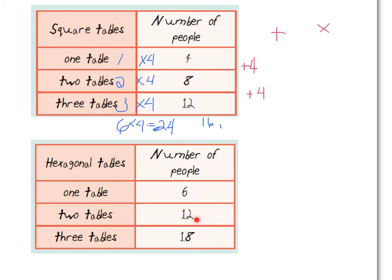6 plus what would give me 12? Well, plus 6. 12 plus 6 would give me 18. So perfect. If I was doing number of people to number of people, I would be adding 6 each time.